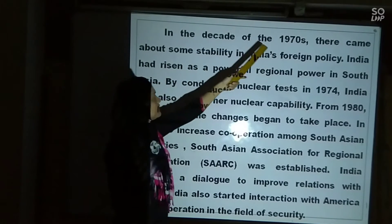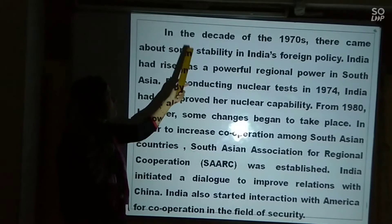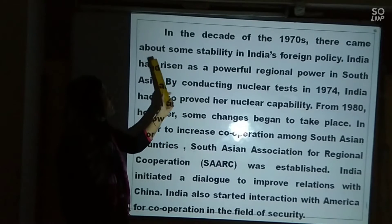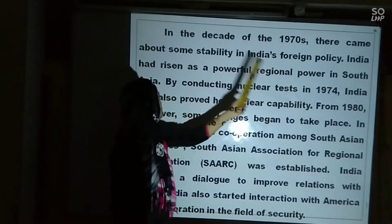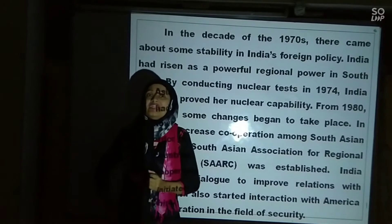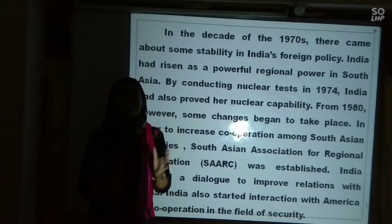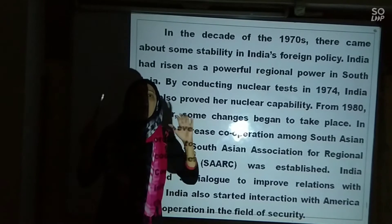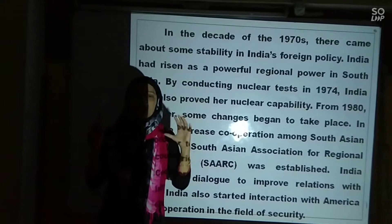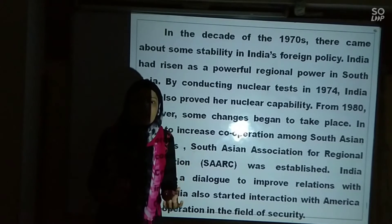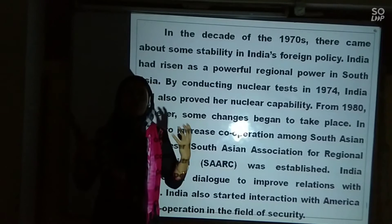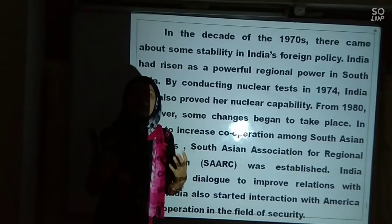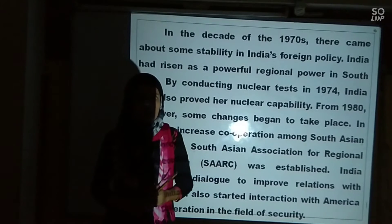In the decade of 1970s, there came about some stability in India's foreign policy. India had risen as a powerful regional power in South Asia. 1970s ka jo period tha, us waqt India ka jo foreign policy hai woh thoda stable hone laga, condition thodi improve hone lagi, and India apne region mein ek super power ki tarah uberke aya — South Asia mein.